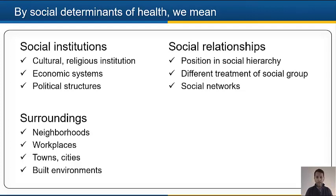Social determinants of health can be grouped as follows. First, we have the social institutions and these structures and systems that influence health. Also, the surroundings — the neighbourhoods, the workplaces, towns, cities and the built environments — are key determinants for health. And also the social relationships, like for example the position in social hierarchy, the different treatment of social groups, and the social networks.